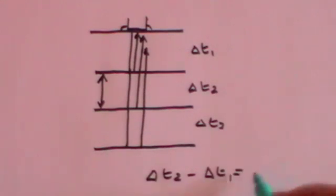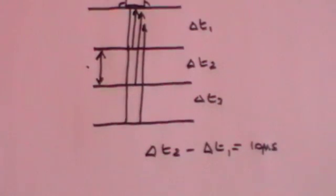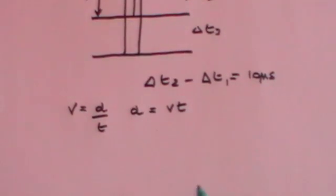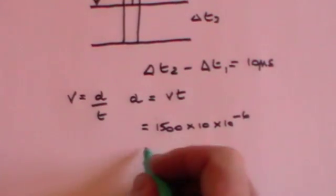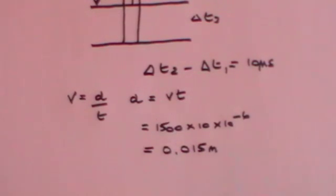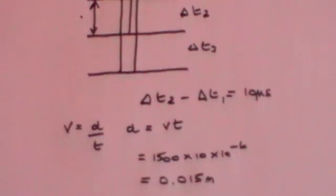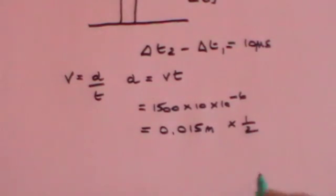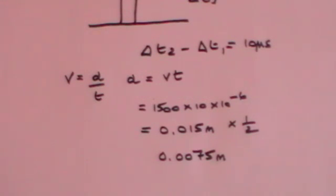So let's say that that difference equals 10 microseconds. Then what is the thickness of this middle layer here? Well, we said velocity is distance over time, which means that the distance is velocity times time. The velocity is 1500 meters per second and the time is 10 times 10 to the minus 6 seconds. So that comes out to be 0.015 meters. But remember, that is the distance to go there and back. So that's effectively twice the thickness that you want to measure. So the actual thickness of the muscle that you're measuring here is actually only half that. So you have to multiply by a half and that comes to 0.0075 meters, which is about 7.5 millimeters.